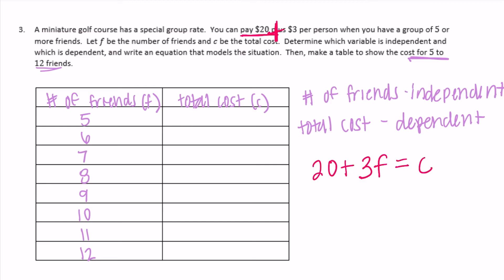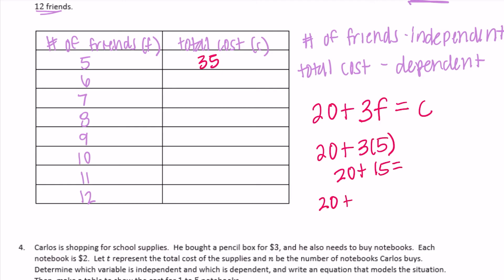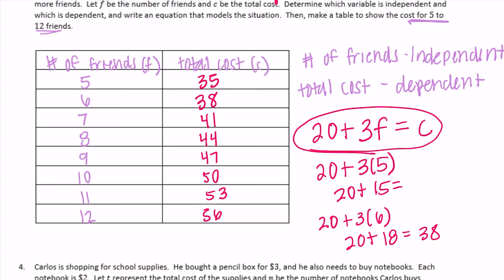I'm just going to add $3 to each one for each additional friend. So working through 5 to 12 friends, adding $3 each time gives us our total costs. There's our equation, and that's how much it costs for each total number of friends.